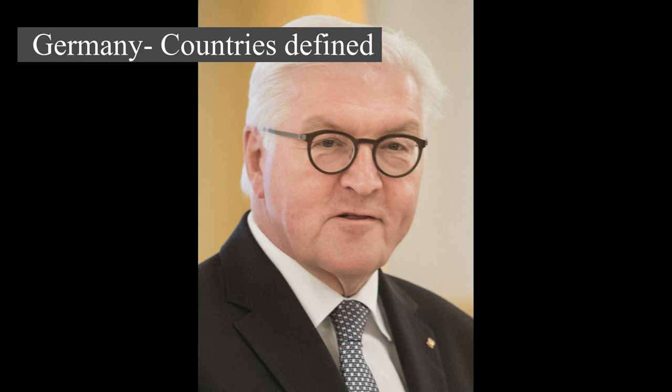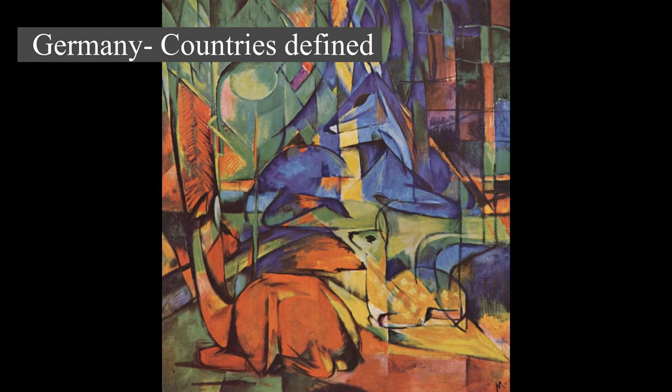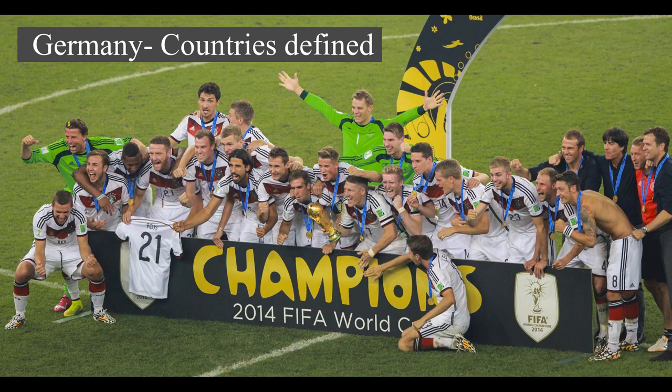The Nazi seizure of power in 1933 led to the establishment of a totalitarian dictatorship, World War II, and the Holocaust. After the end of World War II in Europe and a period of Allied occupation, Germany was organized into two separate polities: the Federal Republic of Germany, generally known as West Germany, and the German Democratic Republic, East Germany, while Berlin continued its four-power status.